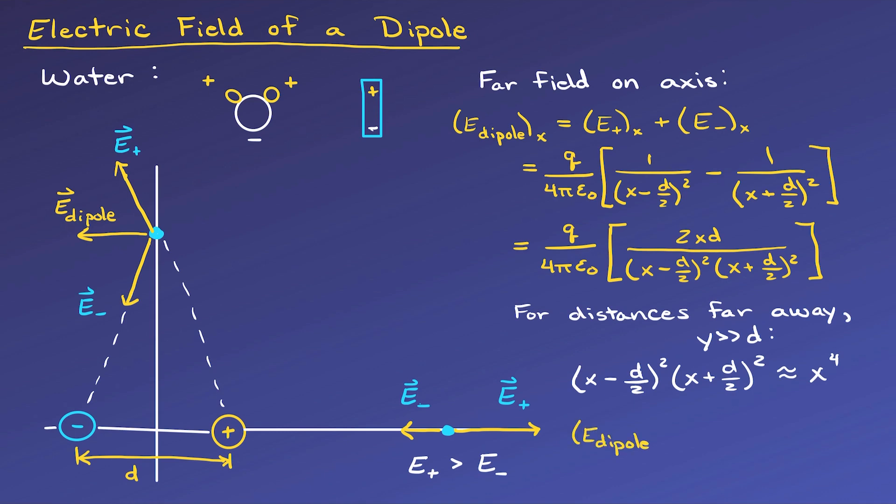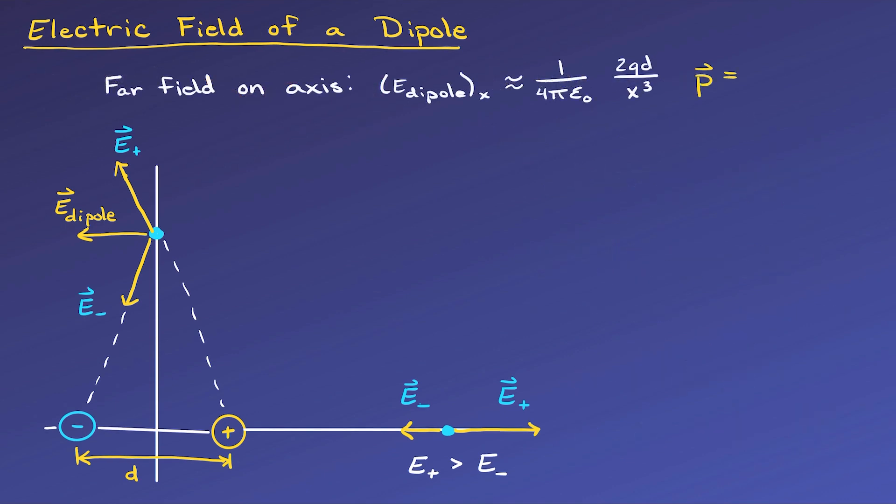Now we can simplify, canceling one of our x's, and get the following for the electric field of the dipole far field on this axis. Before we move to the perpendicular axis, or the bisecting plane that runs between the dipole, we will define the quantity q times d to be the dipole moment.